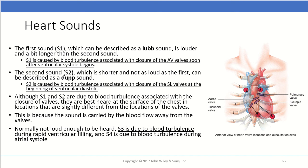Although S1 and S2 are due to blood turbulence from valve closure, they are best heard at the chest surface at locations slightly different from the actual valves, because the sound is carried by blood flow away from those valves. Normally S3 and S4 are not loud enough to be heard: S3 is due to blood turbulence during rapid ventricular filling, and S4 is due to blood turbulence during atrial systole.